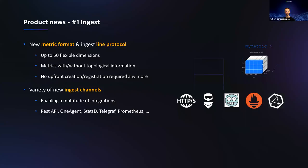Starting with the news. Product news number one, available since version 202, is a brand new ingest interface. It allows new flexibility — flexible dimensions, the chance to relate custom metrics with topology information, meaning you can link them to services, hosts, or any entity already living in the Dynatrace platform. And compared to older approaches like custom devices, there's no upfront registration. You can just push the metric. This also comes with a variety of different ingest channels.